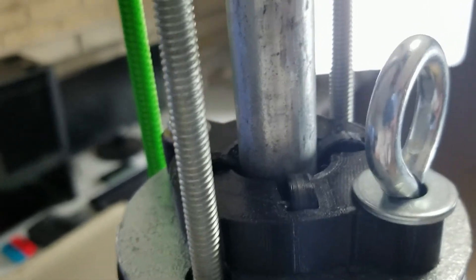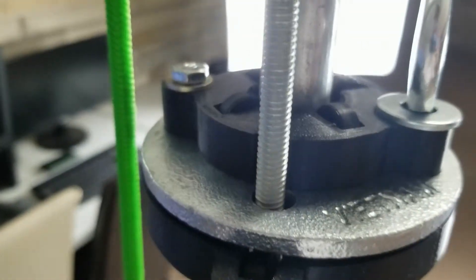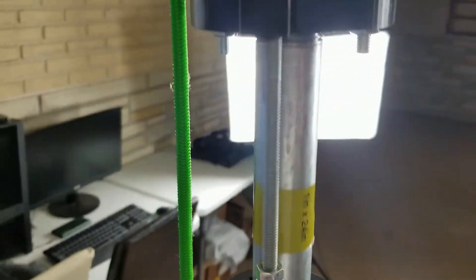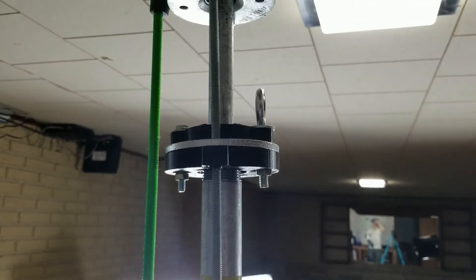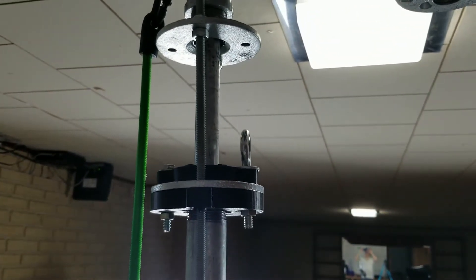And then up here at the top, there's a similar situation with these bearings around that smaller middle pipe. That noise you're hearing as the pipe slides up and down is one of the flanges rubbing against the threaded rod. I'm going to have that fixed in the next version.